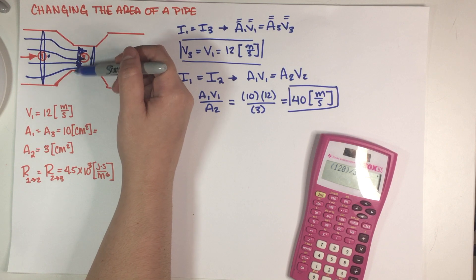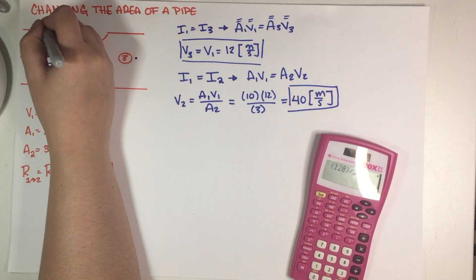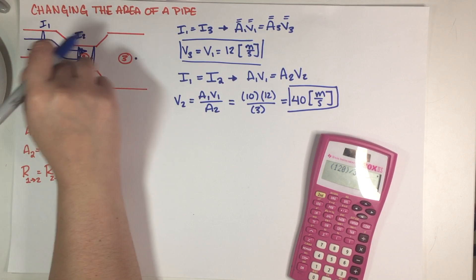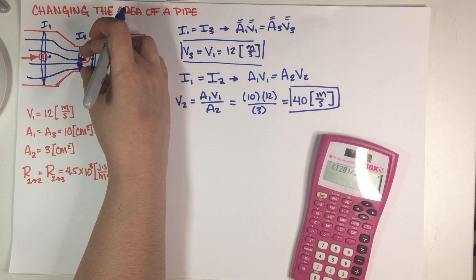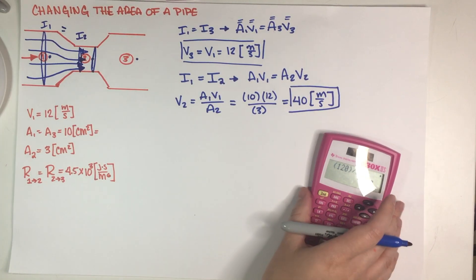And the closer they are to each other then that means that the velocity is going up. Now in both cases you have the same flow because you have the same amount of flow lines, you have four here and four here, but these ones are closer to each other which means that the velocity is going up.